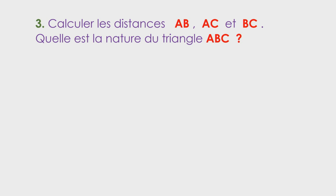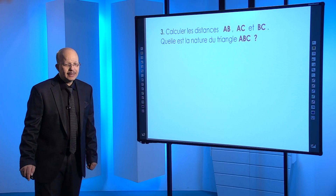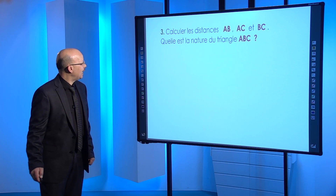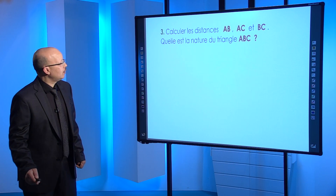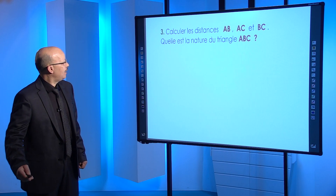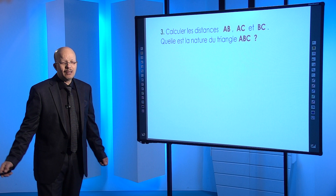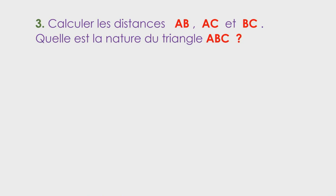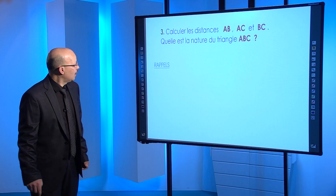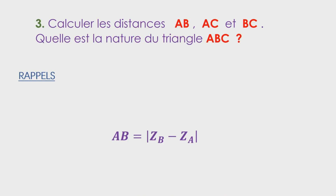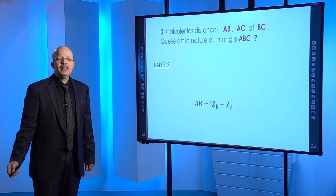Troisième question : calculez les distances AB, AC et BC. À partir de ces distances, je peux conclure la nature du triangle ABC. Pour calculer la distance AB, il faut rappeler la définition de la distance à l'aide des nombres complexes : la distance AB est le module de (ZB - ZA).